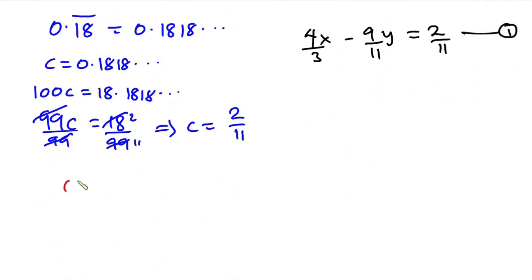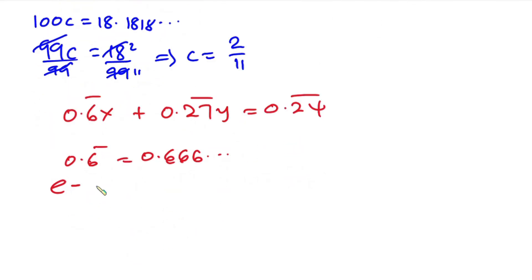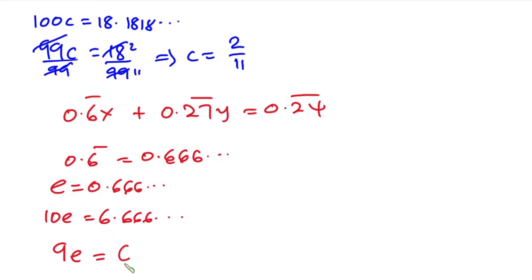The second equation has 0.6̄ x + 0.2̄7̄ y = 0.2̄4̄. Let's convert 0.6̄ first. Let e = 0.666... Multiplying by 10 gives 10e = 6.666... Subtracting the first equation from the second gives 9e = 6. Dividing each side by 9, e = 6/9 = 2/3.